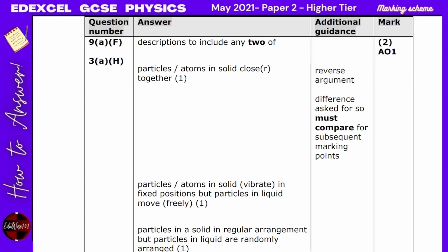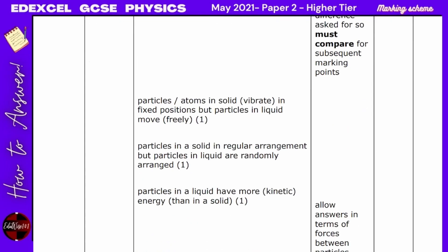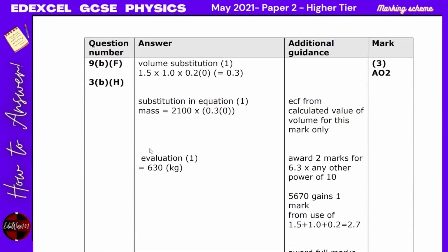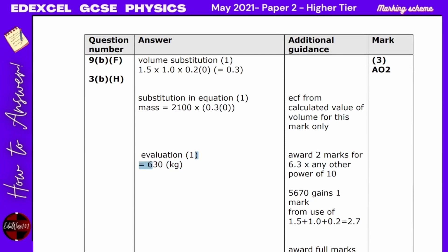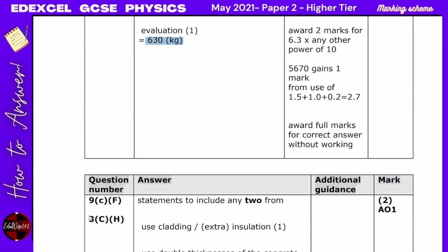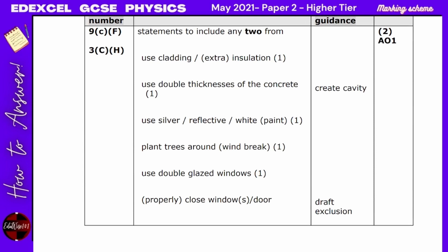For the marking scheme on Question 3: particles in solids are closer together, have fixed positions, while particles in liquids move freely; solids have a regular arrangement and liquids have more kinetic energy. The mass of the concrete block was 630 kg. Valid answers for heat loss reduction include: use cladding, double thickness of concrete, white paint, plant trees as a windbreak, double-glazed windows, or draft exclusion.